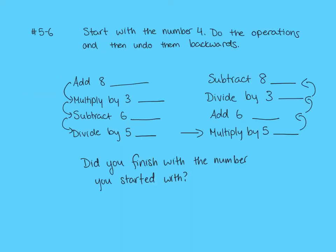For questions 5 and 6, it will look a little bit more complicated, but you just need to follow along. So they'll ask you to start with a specific number. So in this example, it's 4. Do the operations and then undo them. So you need to follow the arrows. You'll start at the top left, which is where you'd expect. And you're going to move down, but then you're actually going to go back up.